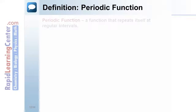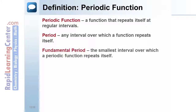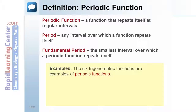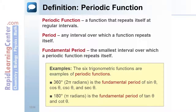Definition — Periodic Function: A function is periodic if it repeats itself at regular intervals. A period is any interval over which a function repeats itself. A fundamental period is the smallest interval over which a periodic function repeats itself. The six trigonometric functions are all examples of periodic functions. 360 degrees, or 2pi radians, is the fundamental period of sine, cosine, cosecant, and secant. 180 degrees, or pi radians, is the fundamental period of tangent and cotangent.